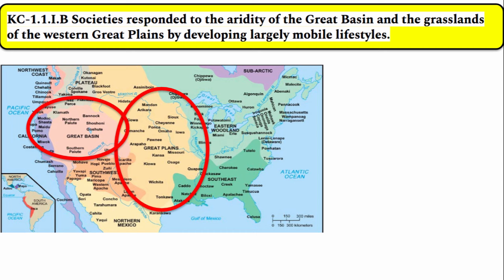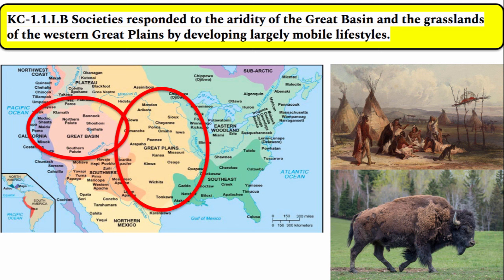Societies responded to the dryness of the Great Basin and the grasslands of the western Great Plains by developing largely mobile lifestyles. The Sioux people on the Great Plains, as a result of lack of natural resources and fertile soil, relied on a nomadic hunter-gatherer lifestyle. Part of the reason they were hunters and gatherers was because of the extreme importance of hunting bison, so you had to move where the animals are, and as a result in these two regions you're going to see mainly a nomadic hunter-gatherer type society develop.